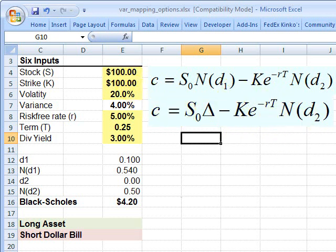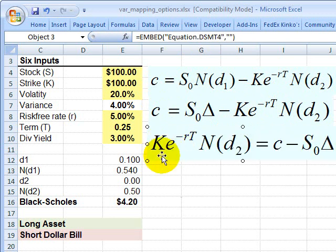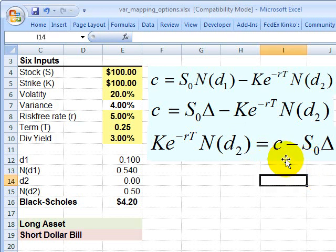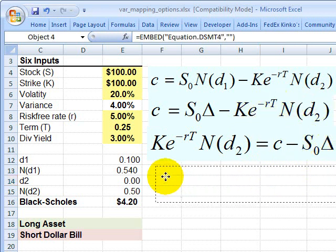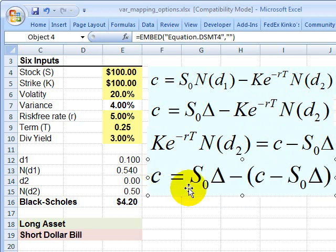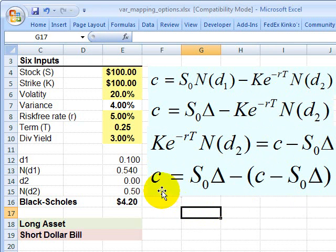And now we can use this formula here to just show that this discounted strike price, or being short the U.S. dollar, is equal to the price of the call minus delta number of shares. So if we take this and substitute it back in, we'll end up with a formula that's obviously true because it's a bit circular or tautological, but that's okay, it explains our mapping logic.